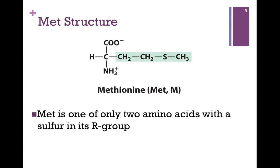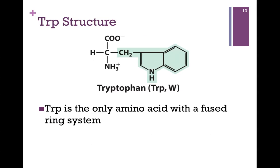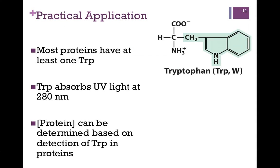Next we have methionine. It's one of only two amino acids that has a sulfur in its side chain. Here's tryptophan — it's the only amino acid with a fused ring system, so it's pretty easy to spot. Look at that single-letter code: W. That might be a little hard to remember, but here's a mnemonic — it's tryptophan or 'twiptofan.' Because of that fused ring structure with alternating single and double bonds, similar to the bases in DNA and RNA, tryptophan absorbs light at 280 nanometers. Most proteins have at least one tryptophan, so we can measure the absorbance of light at 280 nanometers to determine the protein concentration.